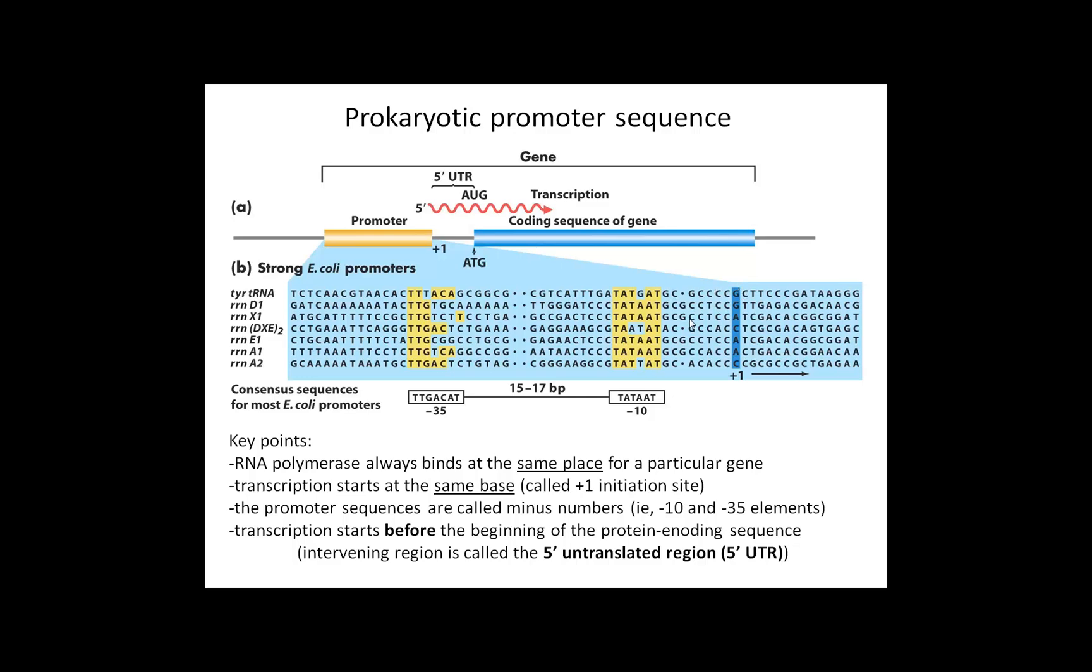If you go backwards from the plus one site, we call these the minus positions. This would be minus one, minus two, et cetera. About ten bases before that plus one site is a region of conserved sequence called the minus ten box.